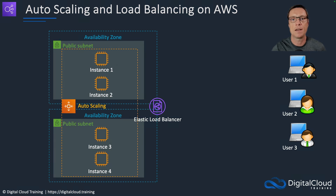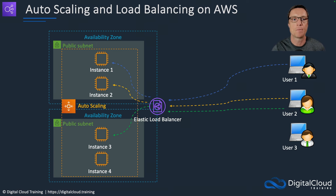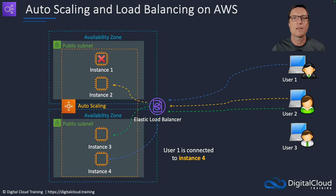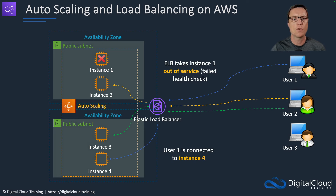We put a load balancer in front and it directs incoming connections. User one has been connected through to instance one, user two to instance two, and user three to instance three. If an instance were to fail, it would be taken out of action and the user would need to be rerouted immediately to another instance. The ELB constantly checks the health of the instances — if an instance fails the health check, it stops sending traffic to it.